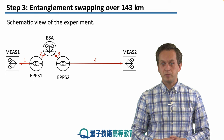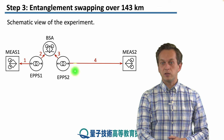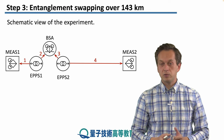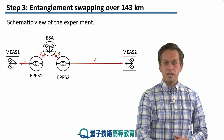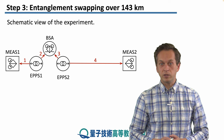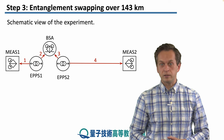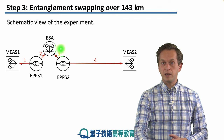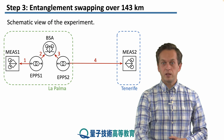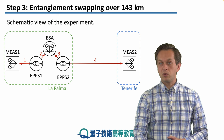Here is a schematic view of the experiment. We have two measurement nodes — measurement 1 and measurement 2 — and two EPPS nodes, EPPS1 and EPPS2. These are nodes that create entangled photon pairs using the spontaneous parametric down conversion process. EPPS1 produced photons 1 and 2: photon 1 traveled to measurement node 1, and photon 2 traveled toward the BSA. EPPS2 created photons 3 and 4: photon 3 was measured at the BSA, and photon 4 traveled all the way to Tenerife at measurement node 2. All of these components were located at node A on La Palma, while Tenerife hosted only the measurement end node.